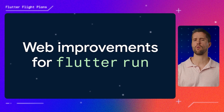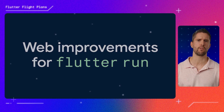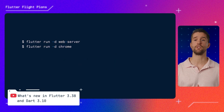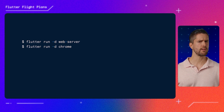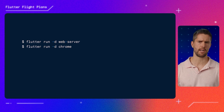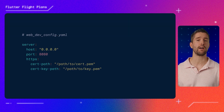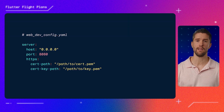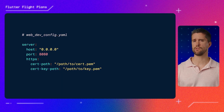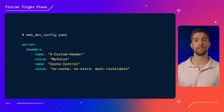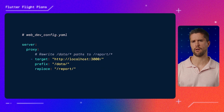Craig also shared updates on improvements to Flutter's dev cycle for the web. First is a stronger, more robust way to configure your web server when running flutter run -d web-server or -d chrome. Most of these options were already available via command line flags, but now you can define a web dev config.yaml file and specify consistent ports, paths to certs for HTTPS testing, custom headers the development server should include in its responses, or even URL rewrites.